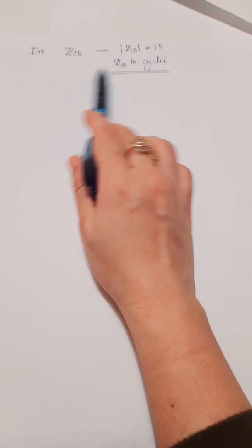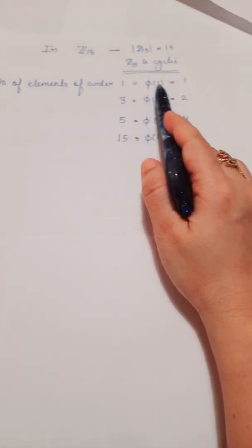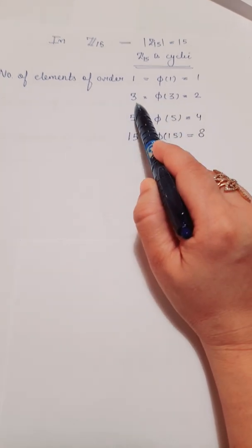So here we know that we need to find the number of elements in Z15. So number of elements of order 1, because we know Z15 is cyclic, so number of elements of order 1 is phi 1.